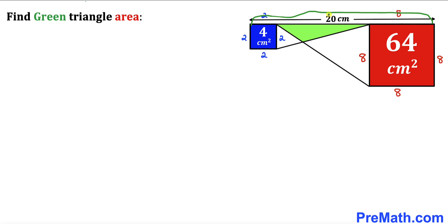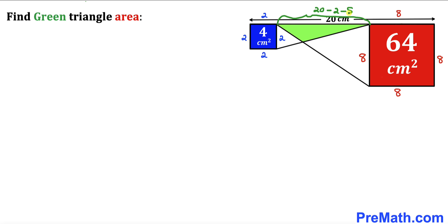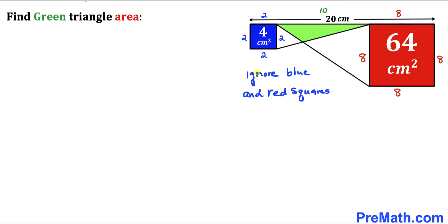Now we can observe that the whole horizontal length is 20 cm, and the individual square side lengths are 2 cm and 8 cm. So the base of the green triangle is 20 − 2 − 8 = 10 cm. Thus the base of the green triangle is 10 cm.